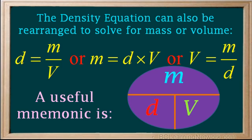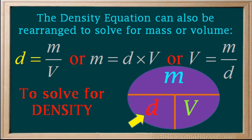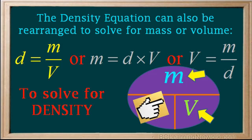To find the equation for each variable, just put your hand on it and see how the others are arranged. To solve for density, put your hand on the d, so d equals m over v.